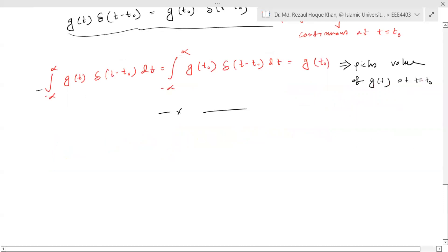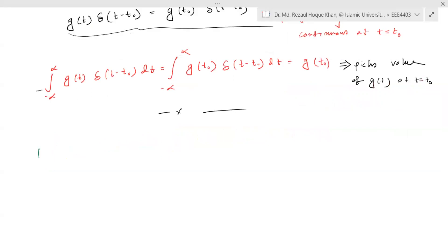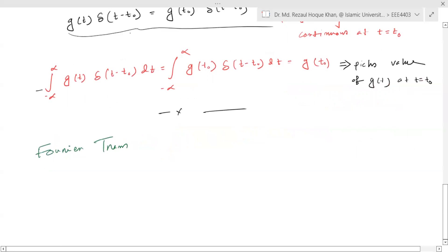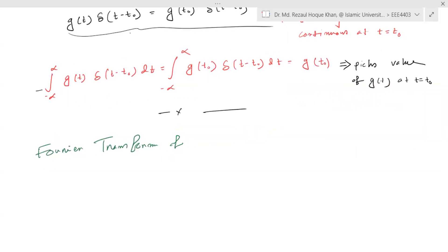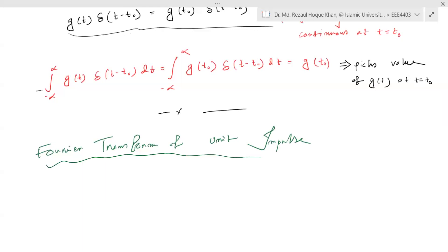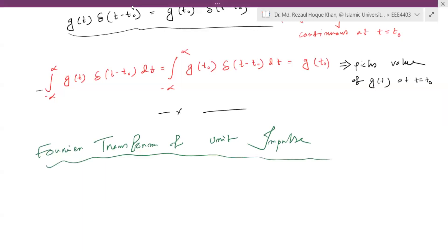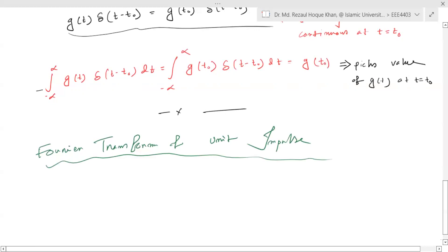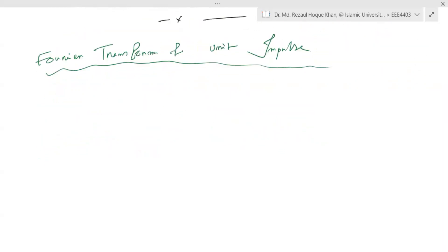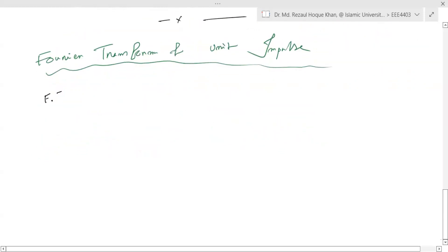We will find the Fourier transform of this unit impulse. The Fourier transform of δ(t) is written as the integral from minus infinity to plus infinity of δ(t)·e^(−j2πft) dt.